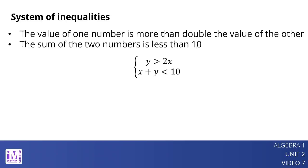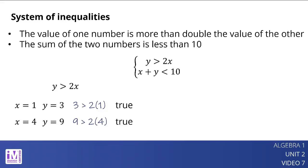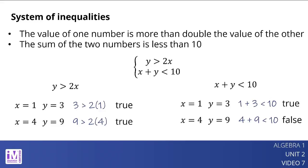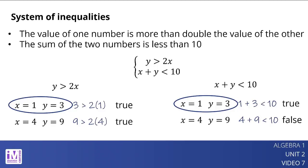There are many possible pairs of numbers that meet the first constraint. One example is x equals 1 and y equals 3, since 3 is greater than 2 times 1 is true. Another pair is x equals 4 and y equals 9, since 9 is greater than 2 times 4 is true. For the second constraint, x equals 1 and y equals 3 works since 1 plus 3 is less than 10. But x equals 4 and y equals 9 gives 4 plus 9 is less than 10, which is false, so it does not meet this constraint. The pair x equals 1 and y equals 3 meets both constraints, so it is a solution to the system. The pair x equals 4 and y equals 9 meets the first constraint but not the second, so it is not a solution.